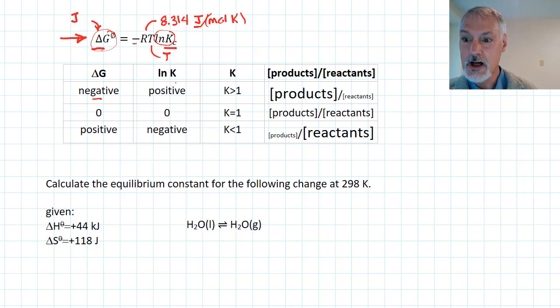That would only happen if the ln of K was positive. Positive ln's, positive natural logs, only happen if K is greater than 1. So, you must have products greater than reactants.